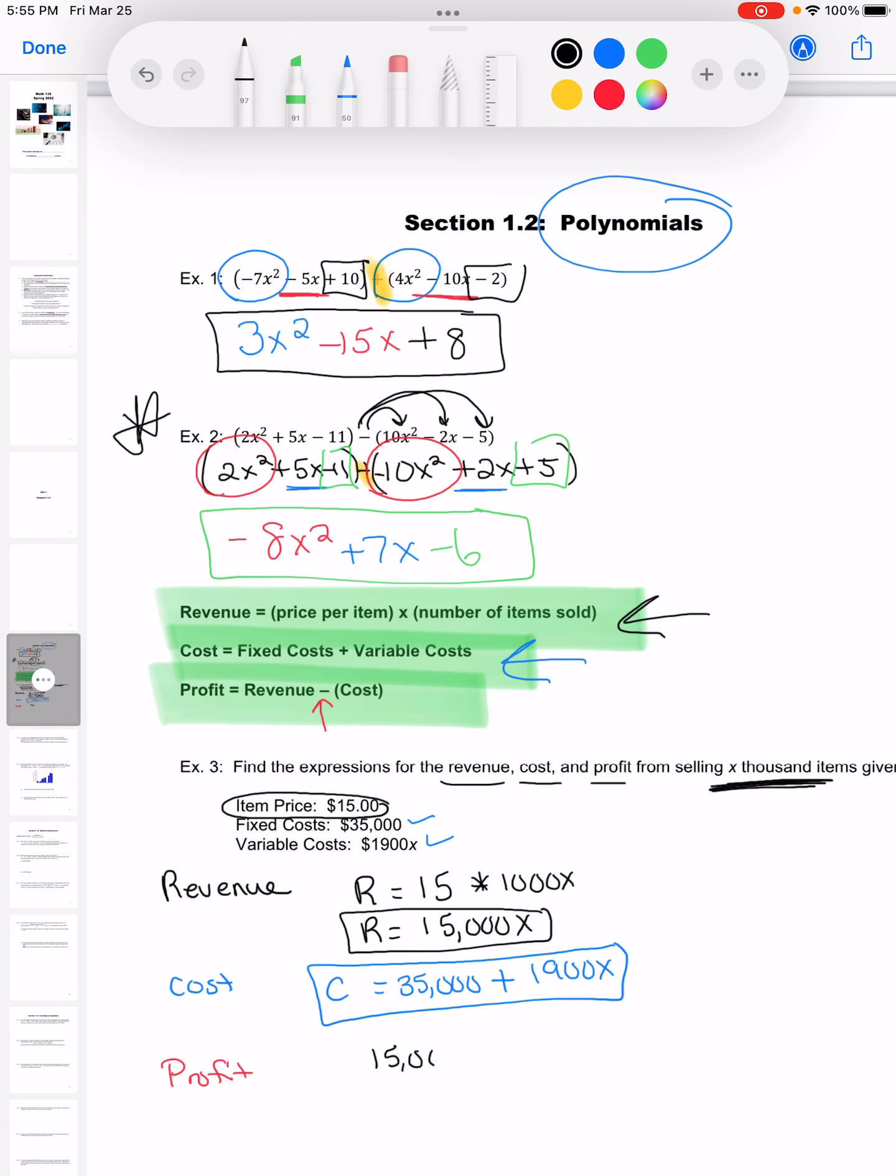So I'm going to have my revenue, so 15,000x. And then it's going to be minus the cost. And I'm going to put that cost polynomial in those parentheses. That's important because when I go to distribute, it needs to go to both terms.